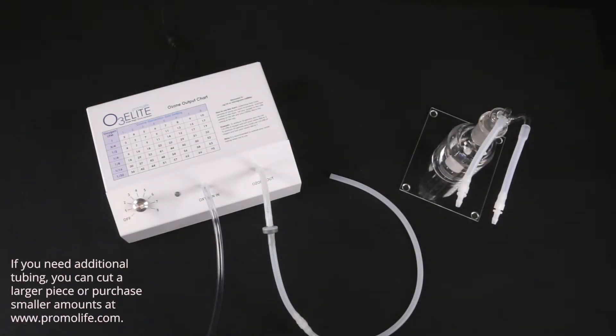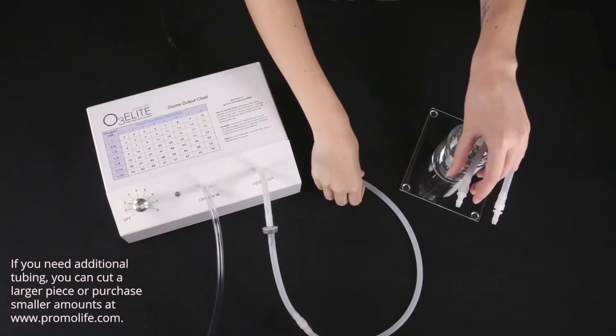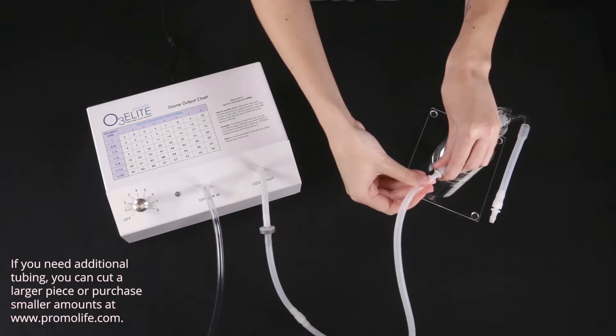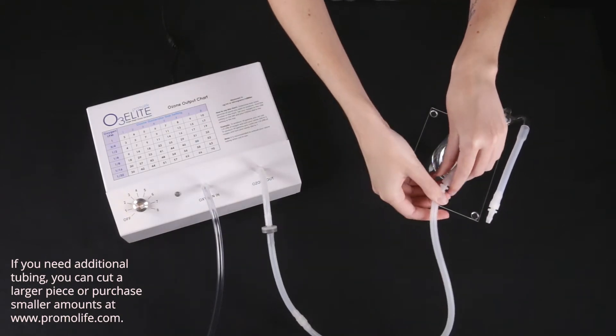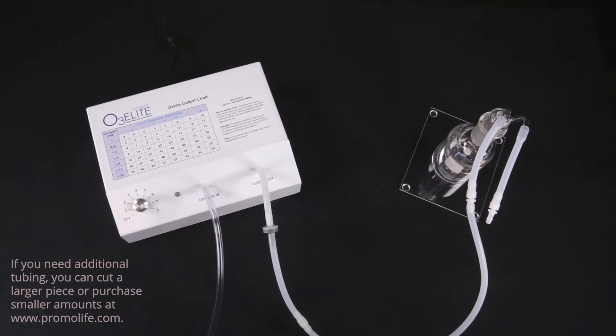Now, back to the 200ml humidifier. Connect the other end of the 5 feet of silicone tubing to the glass straw that goes all the way into the humidifier. This is termed the ozone-in straw.